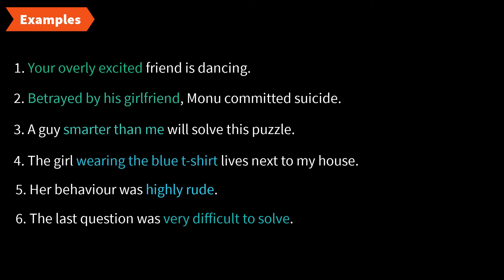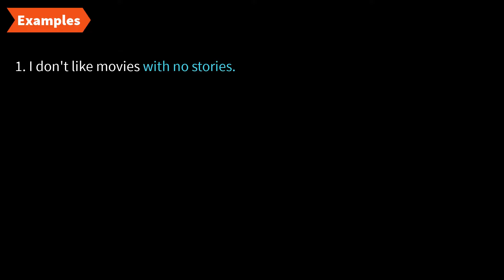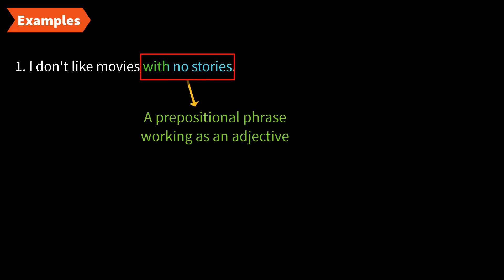So an adjective phrase can come at the beginning, middle, or end of a sentence. Sometimes an adjective phrase does not have an adjective in it — it can start with a preposition, a participle, or an infinitive. For example: 'I don't like movies with no stories.' Here, 'with no stories' is a prepositional phrase starting with the preposition 'with,' but it's modifying the noun 'movies,' so it functions as an adjective phrase.